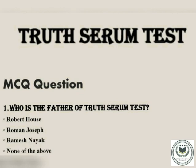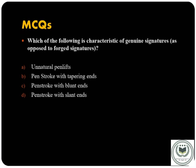Now it's time for an MCQ. Let's check how much you have learned about signature analysis. The question is: which of the following is a characteristic of a genuine or authentic signature, as opposed to a forged signature? Options: A) Unnatural pen lifts, B) Pen strokes with tapering ends, C) Pen strokes with blunt ends, D) Pen strokes with slant ends. Post the correct answer in the comment section.